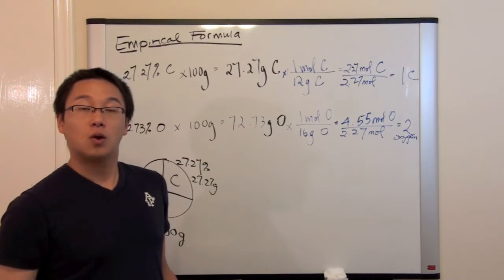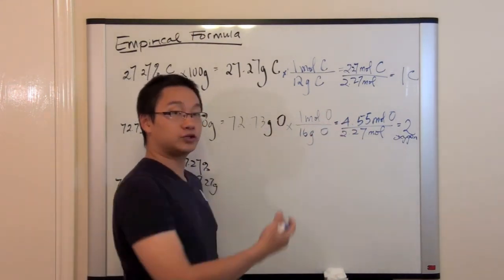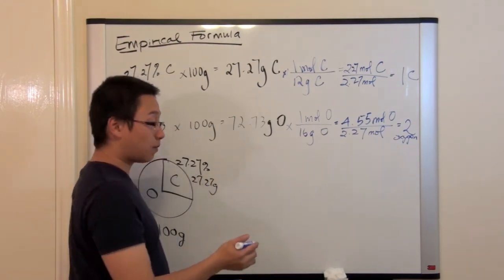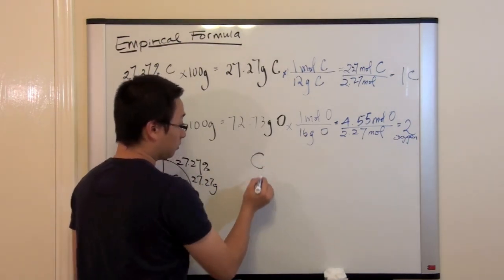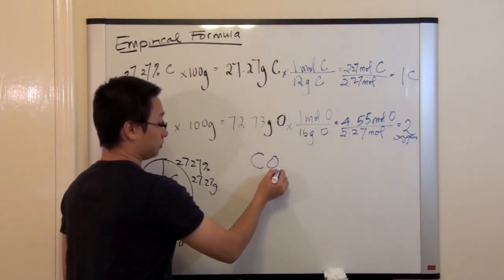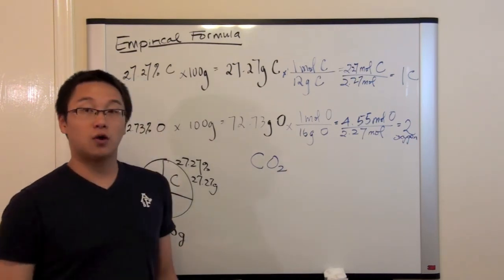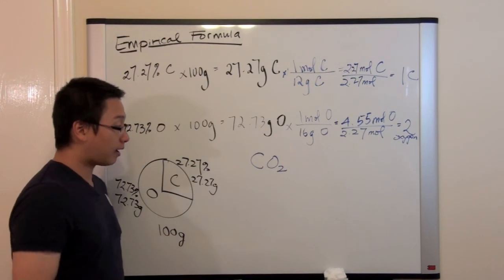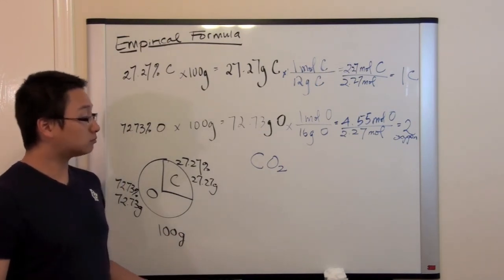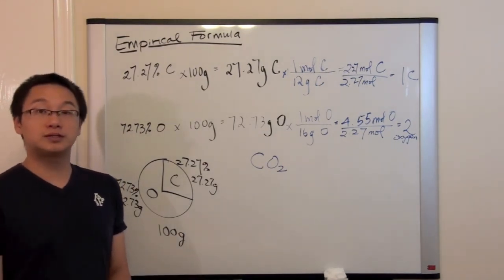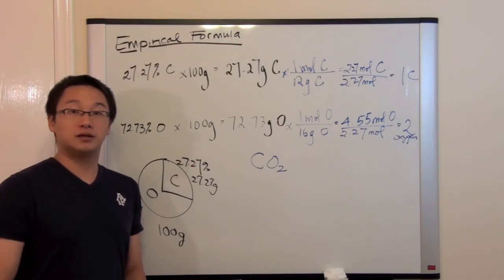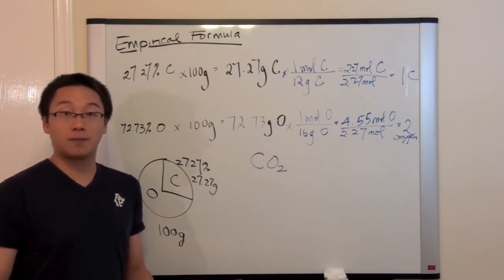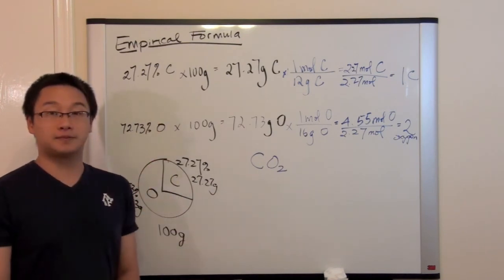And what do we do next here? Well, because we have this ratio, we will find out that for this compound, it has one carbon and two oxygen. So based on the information given at the very beginning, we will have a compound CO2. So this is how we calculate the empirical formula, find out the empirical formula of the compound from the percent composition.